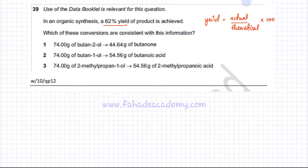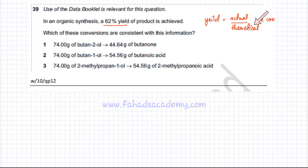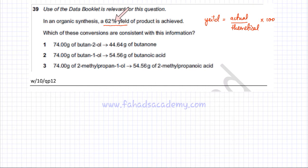What this formula means is that theoretically, if you do your calculations on paper and the output is 100 grams, when you actually do an experiment the substances would not be pure and the conditions would not be ideal. So your actual output is going to deviate from the theoretical answer. If calculations show 100 grams should be obtained but in reality 90 grams is obtained, the yield is 90 divided by 100 into 100, which is 90%. So a 62% yield means the actual output is going to be 62% of what you calculated theoretically.